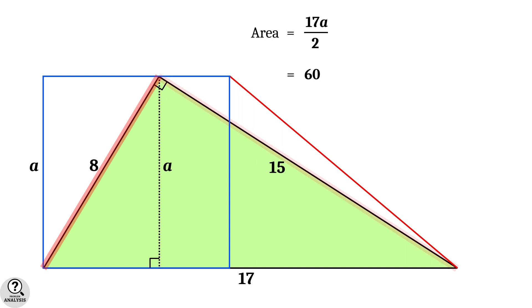That is, we get the equation 17A by 2 equal to 60. Therefore, A is equal to 120 divided by 17 units.